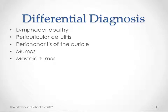In the differential diagnosis, this could be lymphadenopathy — if you see acute otitis media with bulging back there, the bulging could be posterior auricular lymphadenopathy. Periauricular cellulitis can cause swelling and redness but will look more superficial. Perichondritis of the auricle is just inflammation of the cartilage of the auricle. Mumps can present similarly, except that swelling is more in front of the ear than behind it. A mastoid tumor can also have a similar look but will probably be less painful and less symptomatic.